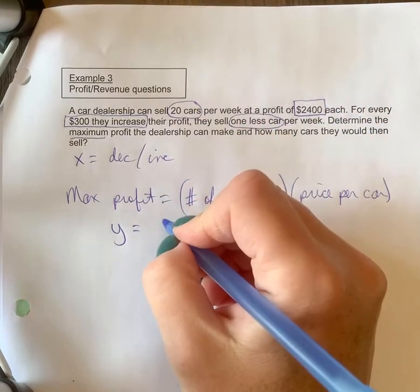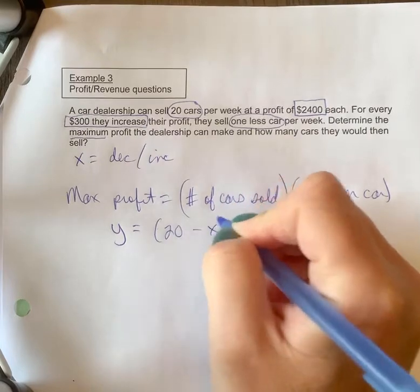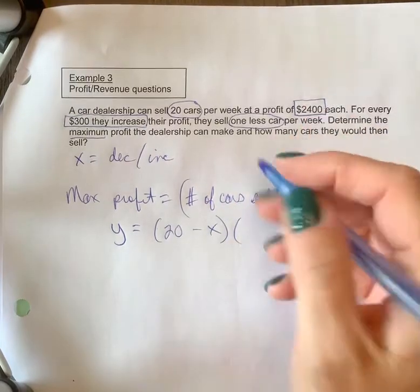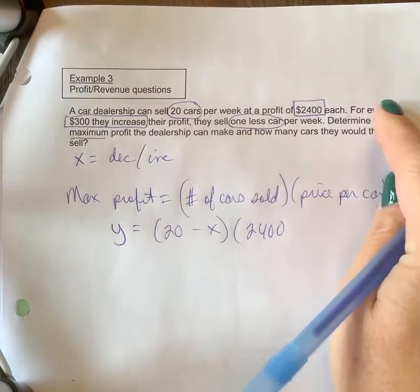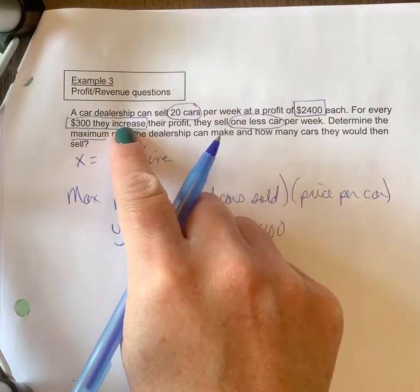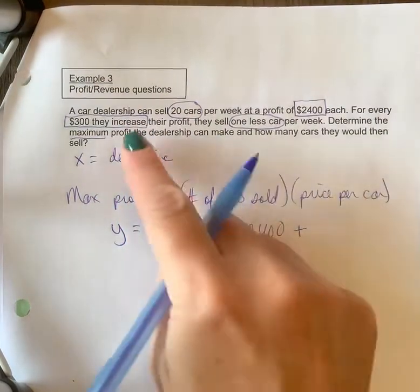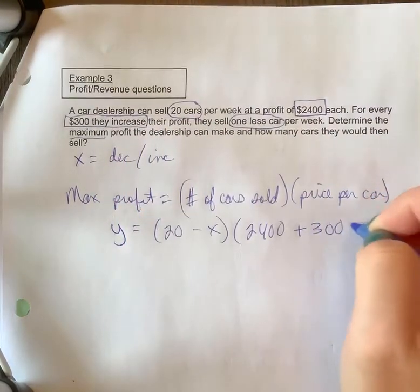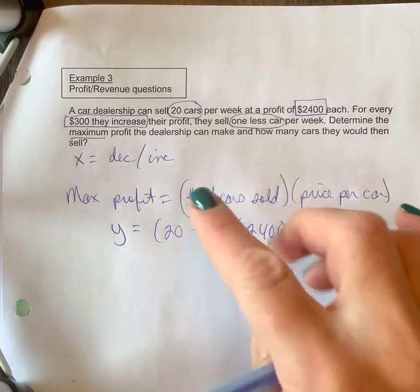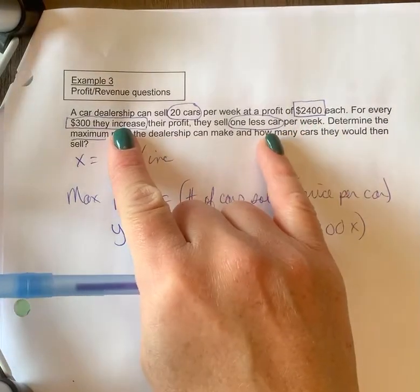So less is minus, so 20 minus x. Price per car is $2,400, but I increase it by $300 in my profit, so it's plus because it's increased, 300x. So your x always goes with the increase/decrease part. Okay, you always have one positive, one negative if it's a max problem.